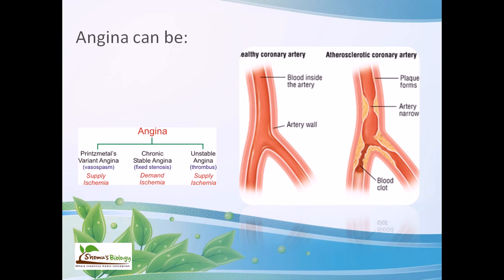Angina can be divided into three parts. First, unstable angina — caused by blockage of the coronary artery through plaque formation or movement of a thrombus. Second, chronic or stable angina — caused by fixed stenosis where blood clots form, blocking blood movement through the coronary artery. Pressure builds up in the heart and eventually that artery ruptures, demanding ischemia.